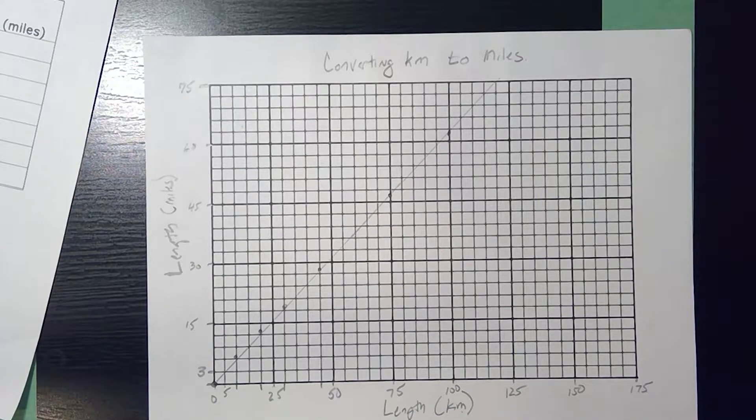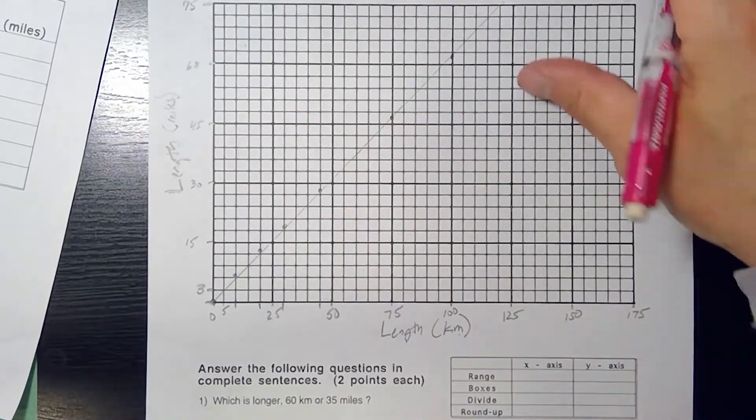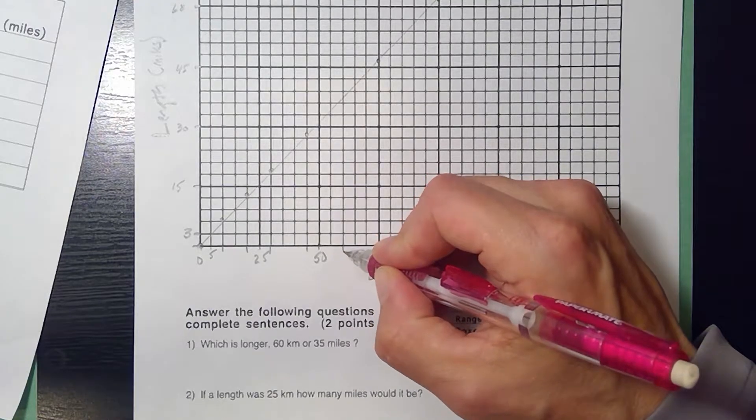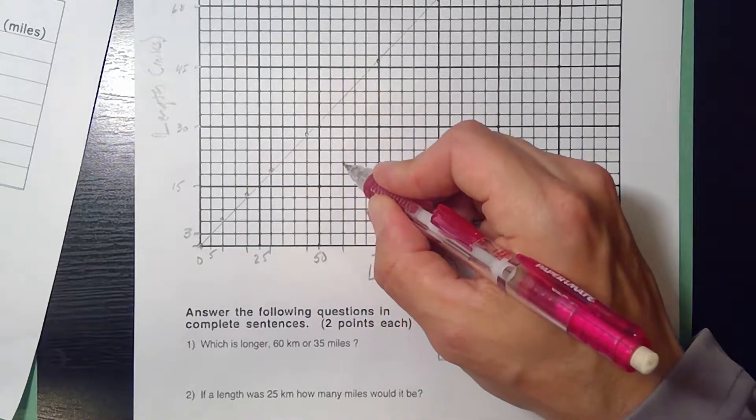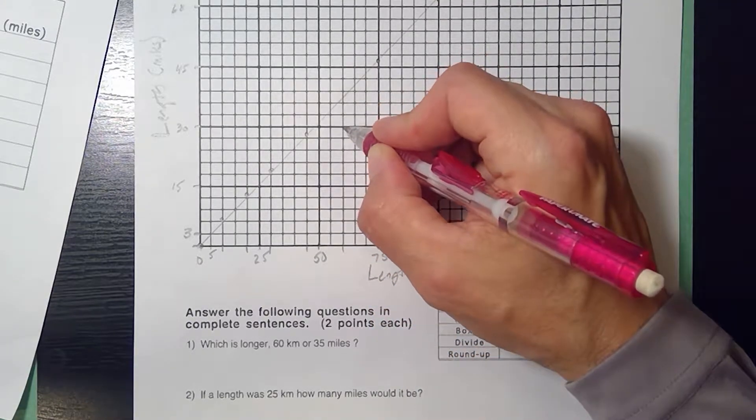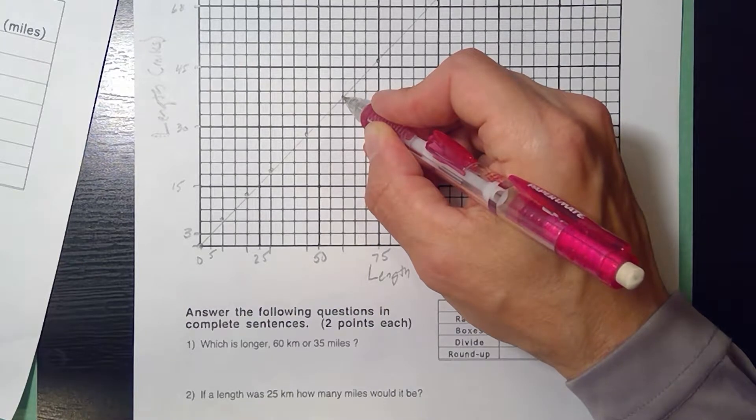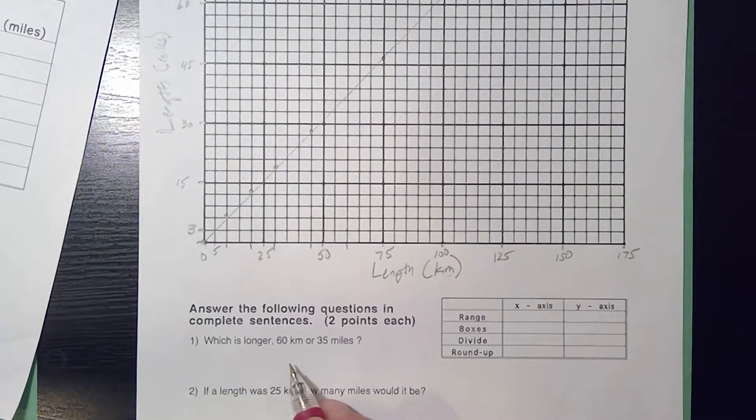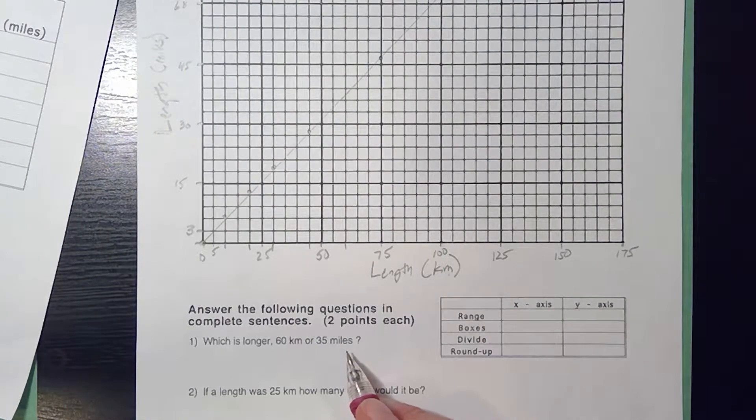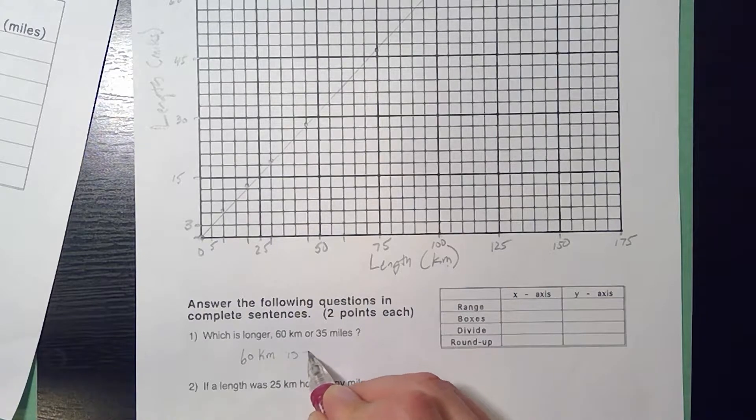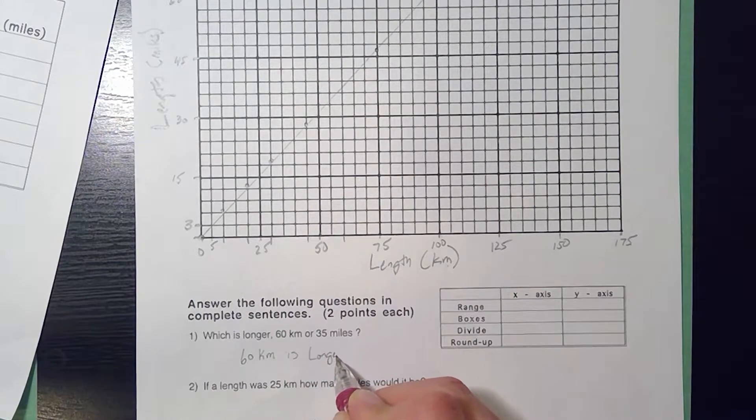Which is longer 60 kilometers or 35 miles? So why don't we start with 60 kilometers? That's here. I'm going to read up. This is 33, 36, 37. So 60 kilometers looks like it's 37 miles. So definitely 60 kilometers is longer.